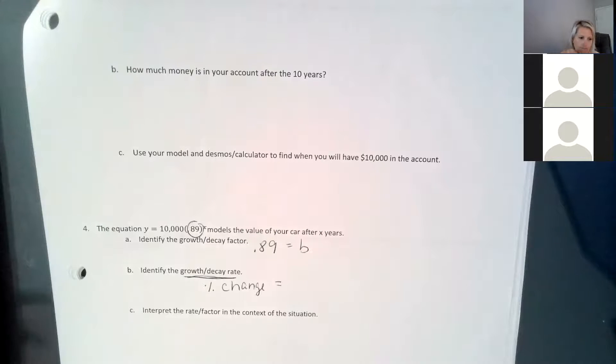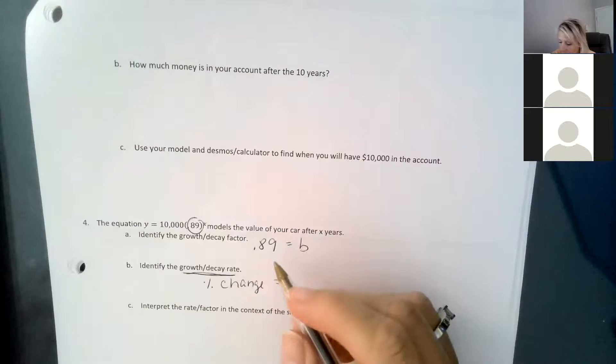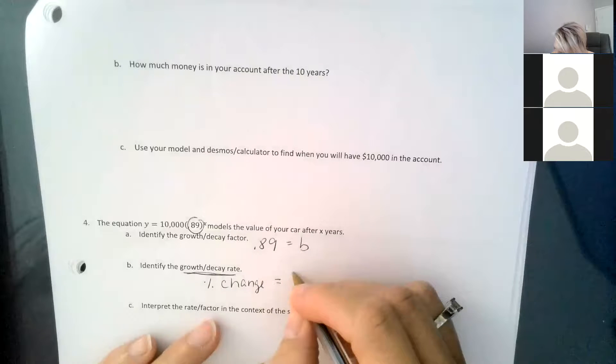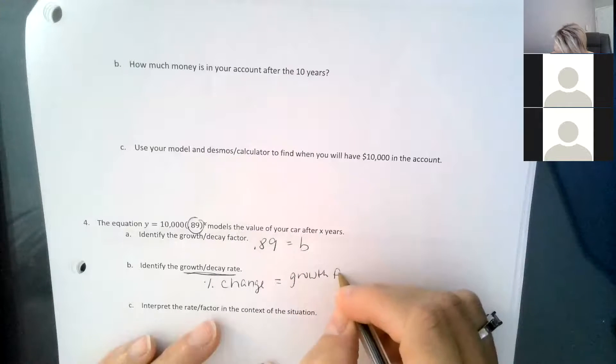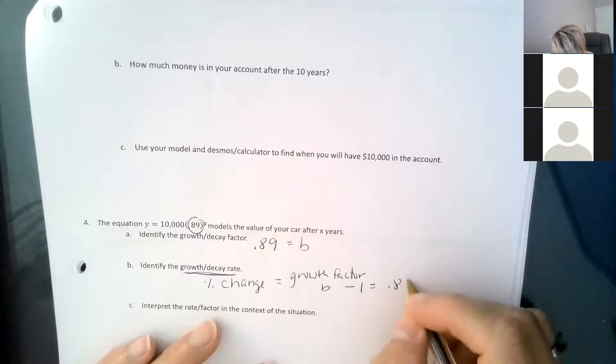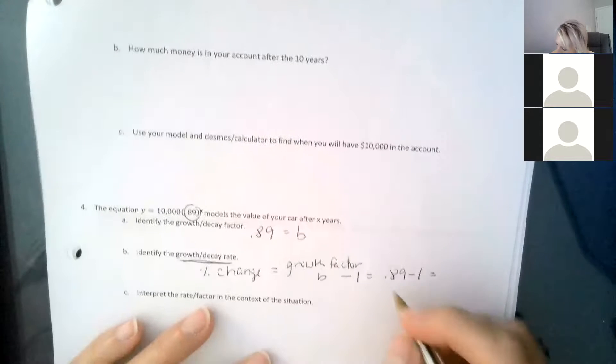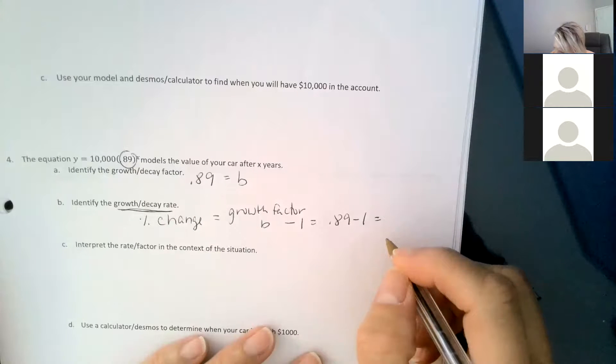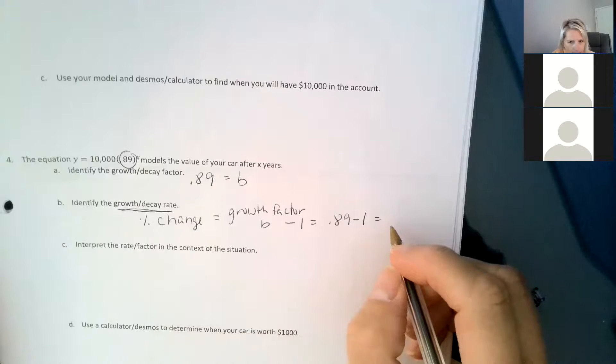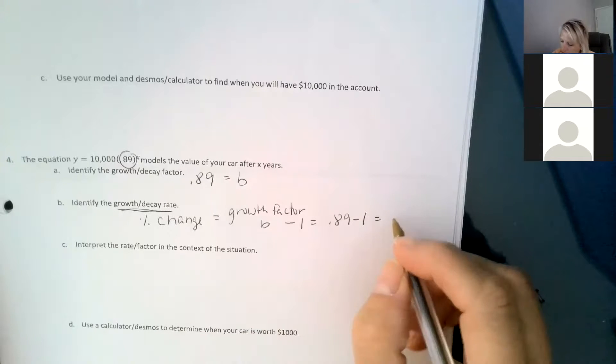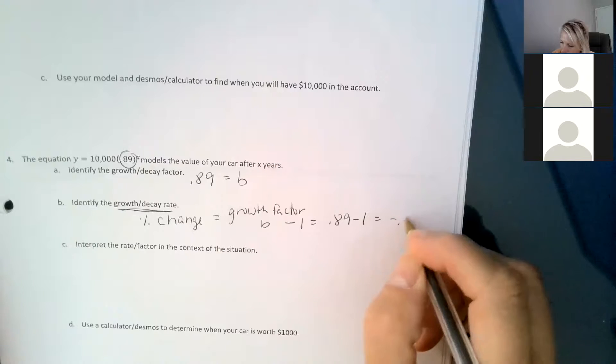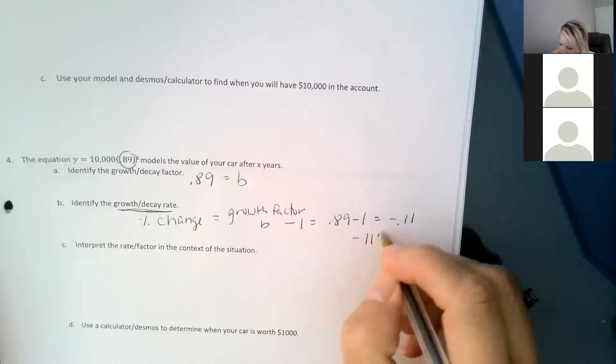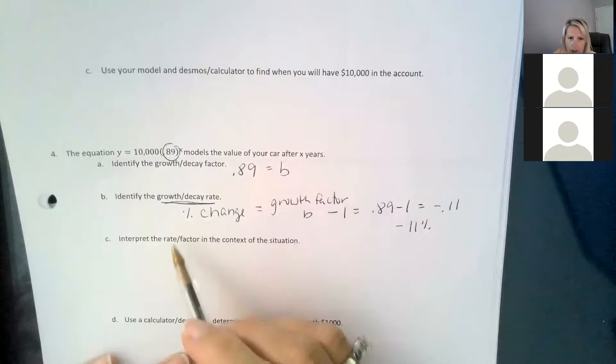So our percent change using the growth factor, once we know that, it's going to be the growth factor B subtracting one. So if we take 0.89 and subtract one, it feels weird, but we get negative 0.11, which is a negative 11%.